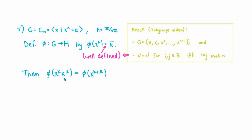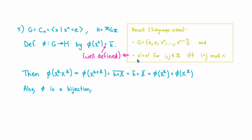To check phi is a homomorphism: phi of x^k times x^l equals phi of x^(k+l), which is the residue class of k+l, which equals k bar plus l bar, which is phi of x^k plus phi of x^l. So phi is a homomorphism. It's also easy to see it's a bijection, making it an isomorphism. Therefore the cyclic group of order n is isomorphic to Z mod nZ. Since any two cyclic groups of order n are both isomorphic to Z mod nZ, and isomorphism is an equivalence relation, any two cyclic groups of the same order are isomorphic.